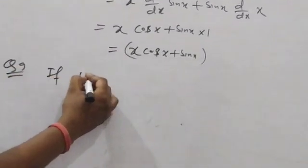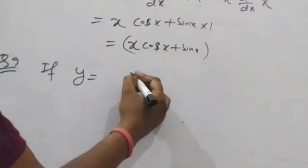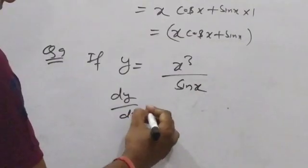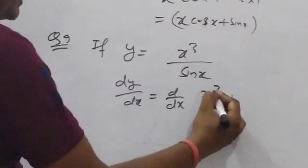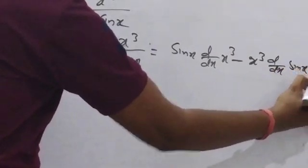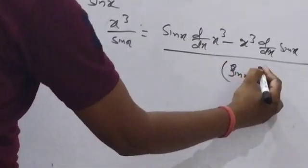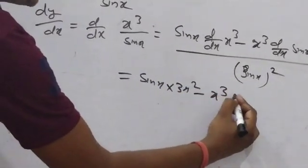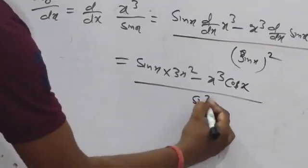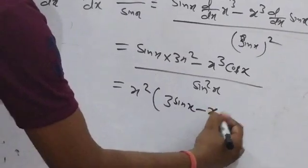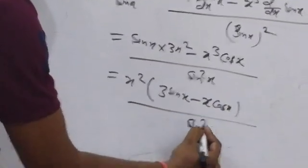Question number 9: if y = x³ / sin x, find dy/dx. Using the quotient rule: dy/dx = [sin x·d/dx(x³) − x³·d/dx(sin x)] / sin²x = [sin x·3x² − x³·cos x] / sin²x. You can take x² common to get x²(3sin x − x·cos x) / sin²x.